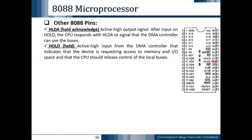The next pin is the HOLD pin — H-O-L-D — which is pin number 31. It is an active high input pin. It is an input from the DMA controller indicating that the device is requesting access to memory and IO space and that the CPU should release control of the local bus.